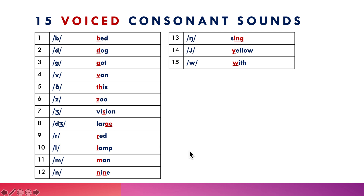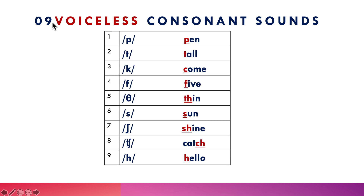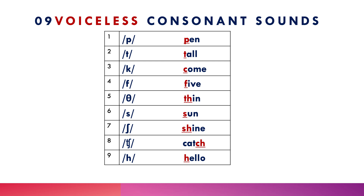We have 9 voiceless consonant sounds: /p/ as in pen, /t/ as in tall, /k/ as in come, /f/ as in five, /θ/ as in thin, /s/ as in sun, /ʃ/ as in shine, /tʃ/ as in catch, and /h/ as in hello. With voiceless sounds, the vocal cords do not vibrate.